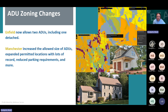A couple of noteworthy ADU changes: Auburn expanded their ADU ordinance in 2023 to allow two ADUs on all lots where single-family homes are allowed, with one of the two ADUs allowed to be detached. Manchester amended their zoning ordinance to increase the maximum allowed size of ADUs, expanded the locations and districts in which they were allowed, and reduced the number of required parking spaces per ADU to only require one parking space per ADU.